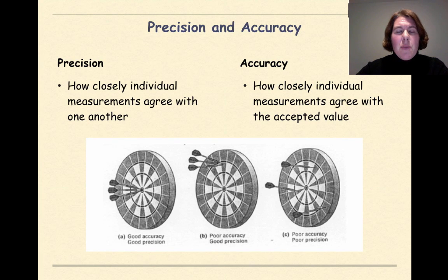So what is the difference between precision and accuracy? Precision is how closely individual measurements agree with one another. So if I gave you three measurements, I could say how precise are they? In other words, how close in measurement are they to one another?